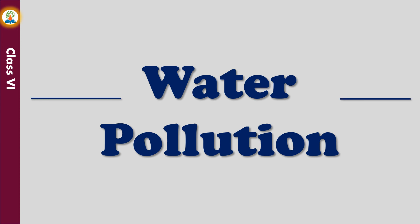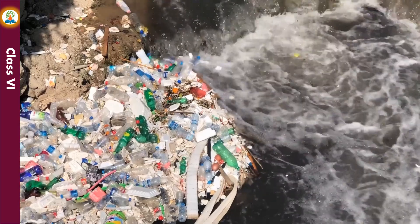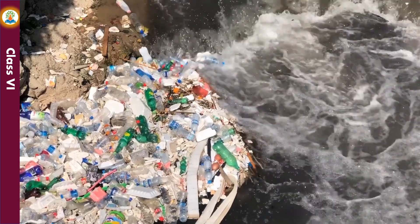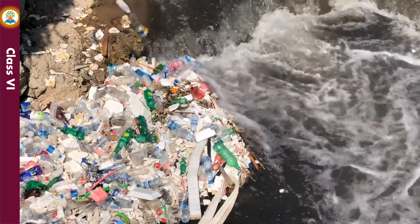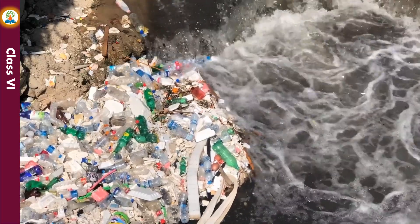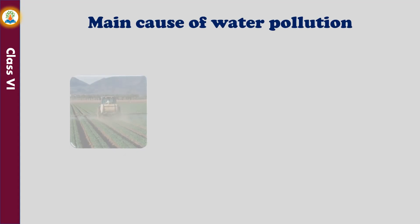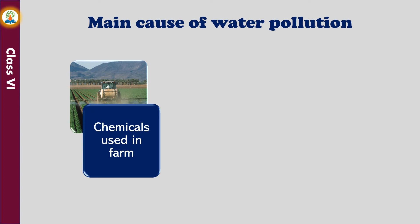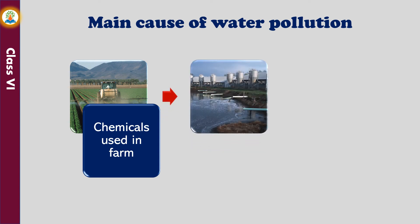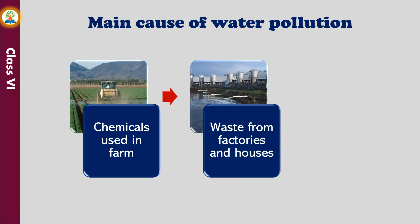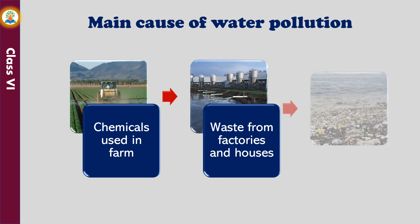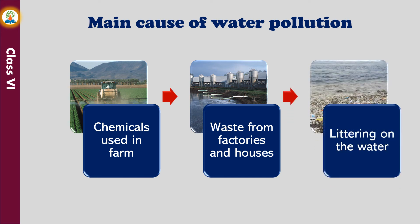Water pollution occurs when a water body is adversely affected by the addition of large amounts of unwanted materials into it. Water pollution affects rivers, lakes, and oceans all over the world, consequently harming human health and the natural environment. Main causes include use of large amounts of herbicides, pesticides, and fertilizers by farmers that are washed away by rainwater into nearby rivers. Waste and sewage generated by factories and houses can also get into the water supply, and littering on water is an additional source of pollution.